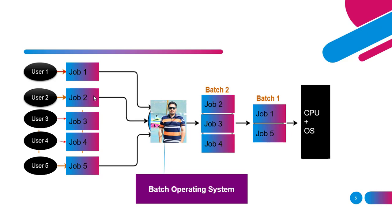Now I'm going to explain the working of a batch operating system. You can see on your screen that there are five users: User1, User2, User3, User4, and User5. Each user has his own job — User1 has Job1, User2 has Job2, User3 has Job3, User4 has Job4, and User5 has Job5. The operator will collect all these jobs from the users.